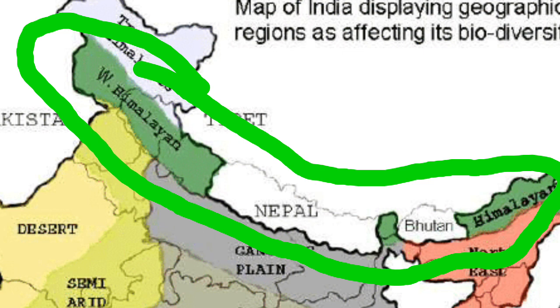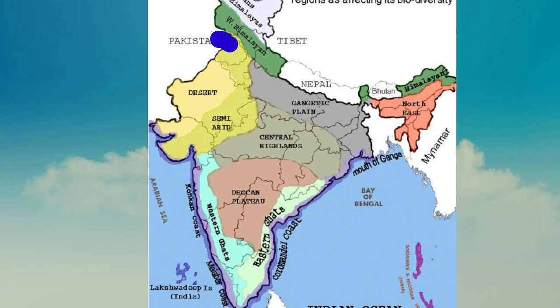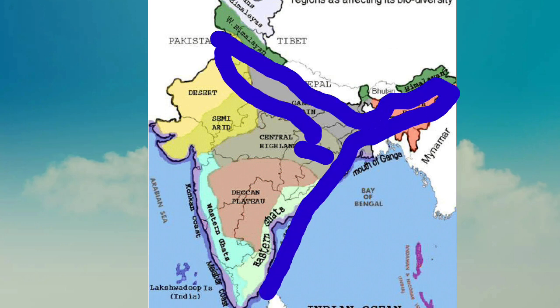The second physical division is the Great Northern Plains, which consists of the Indus basin, Ganga basin, Brahmaputra basin and their tributaries. It is very fertile and good for agriculture and industries. A water divide is made up of a low, narrow ridge of the Aravalli range passing through Delhi and Ambala.